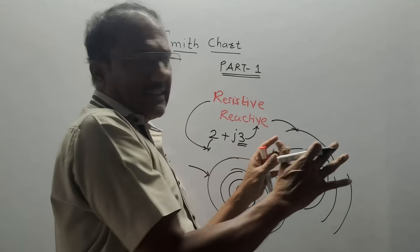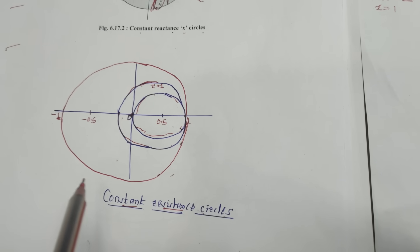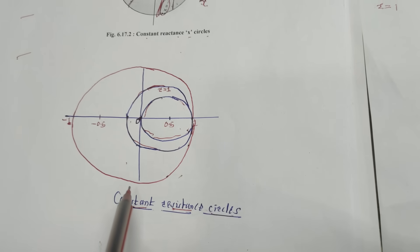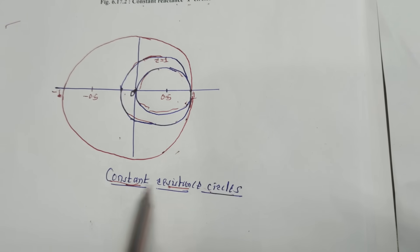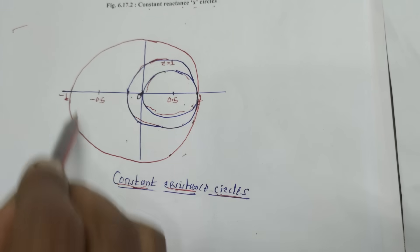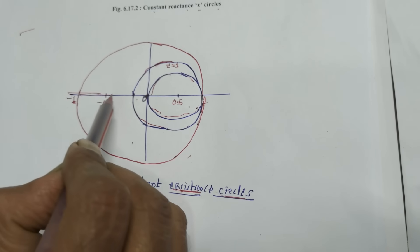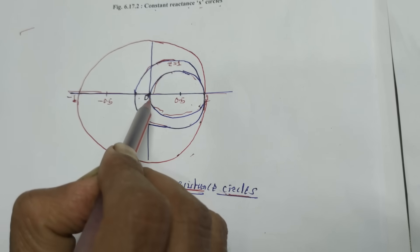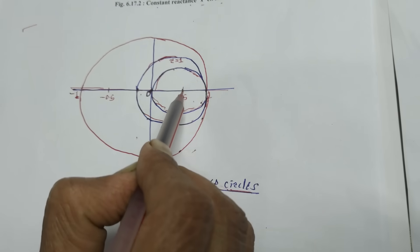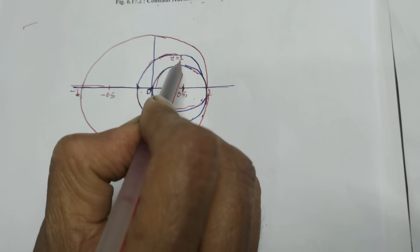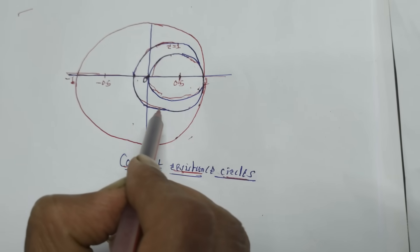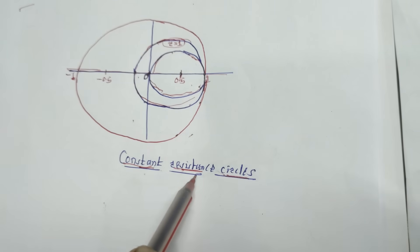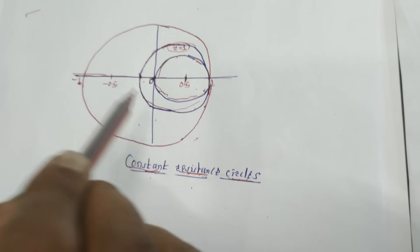Now I will explain the different scales on the Smith Chart. There are two types of circles. First are constant resistance circles — these are complete circles. Always refer to the horizontal line as reference. The innermost circle has its center at 0.5, the next circle has a value of R equals 1, and likewise different constant R circles are marked.